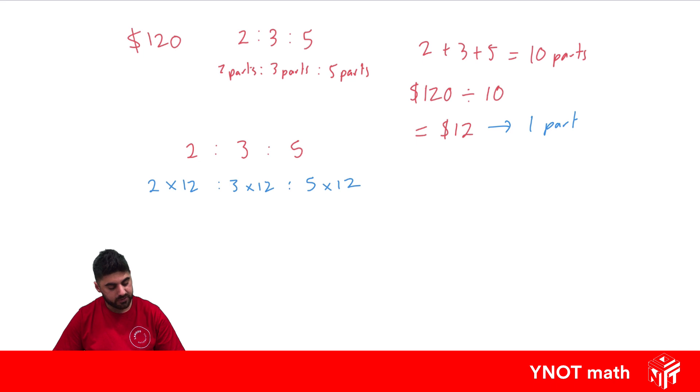Doing this, 2 times 12 is 24, 3 times 12 is 36, and 5 times 12 is 60. And again, you can check if you've done it right by adding those parts up together, those final amounts of 24, 36 and 60. And if it equals your starting amount, you know you've done it correctly. And here, it does equal $120, so we've done it correctly.